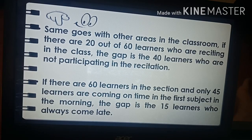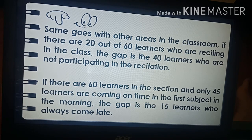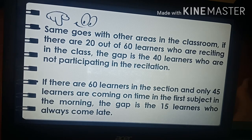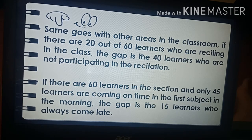The same goes with other areas in the classroom. If only 20 out of 60 learners are reciting, the gap is the 40 learners who are not participating. If 60 learners are enrolled but only 45 come on time to the first subject in the morning, the gap is the 15 learners who always come late.